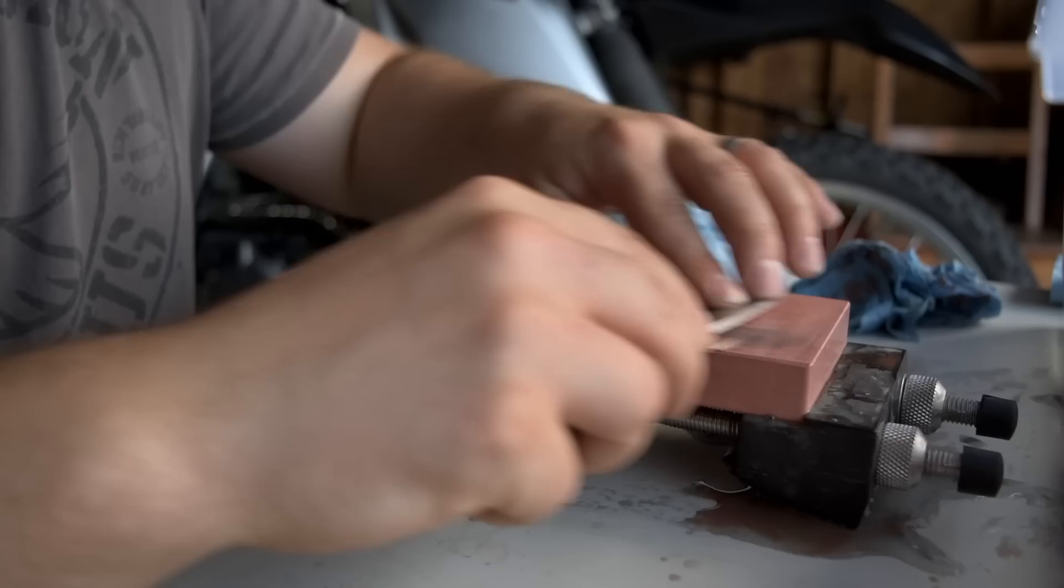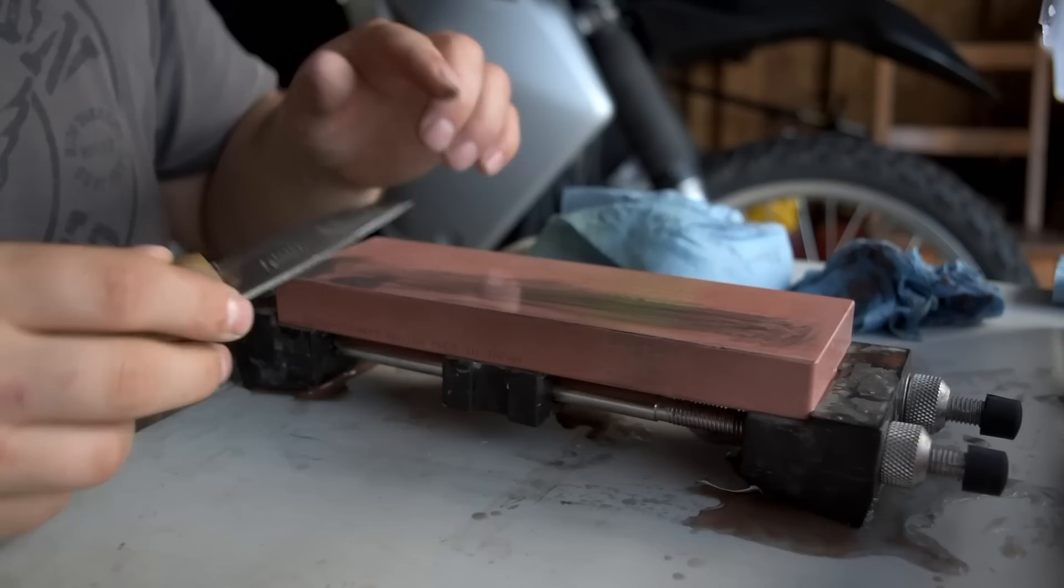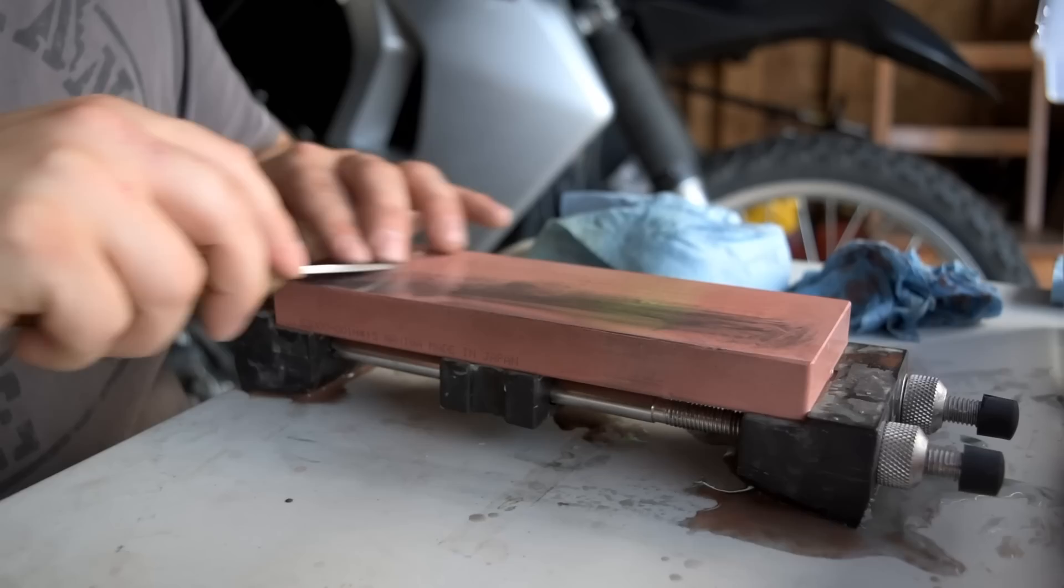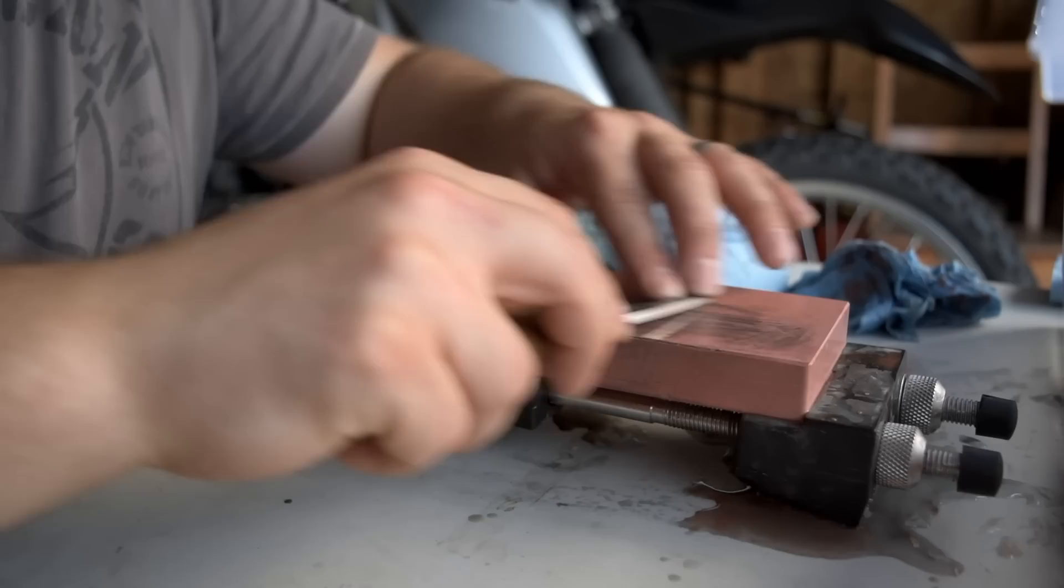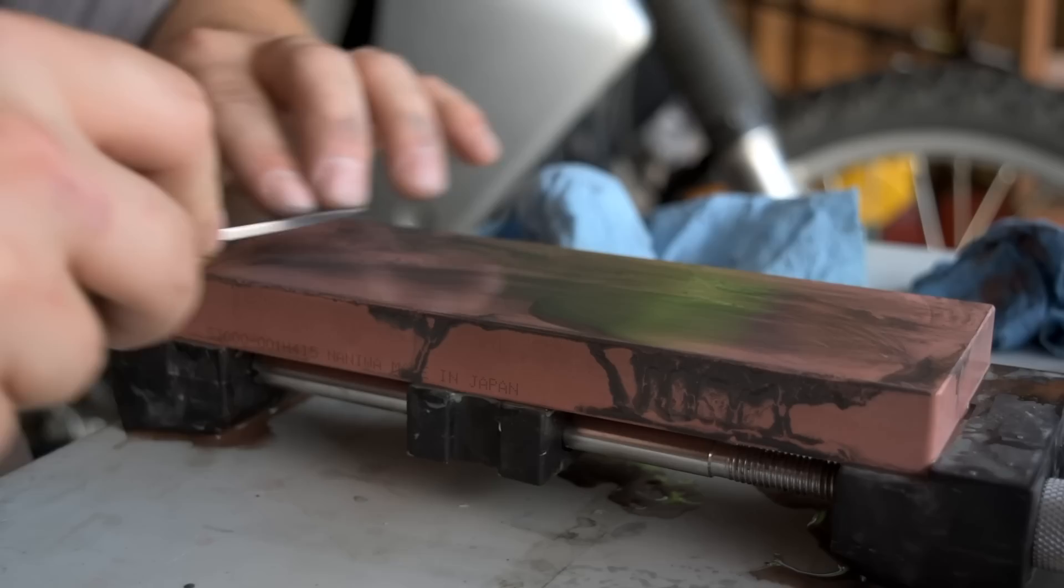This 3000 grit, also exceptional. 6000 grit gives you a really smooth edge. You have to decide if that's what you want or not. You can see how quickly the black builds up on the surface of this stone, so I'll give you an idea of how quickly it's cutting.